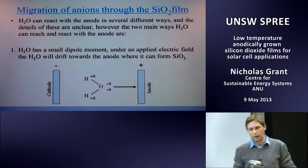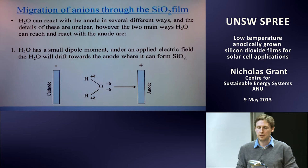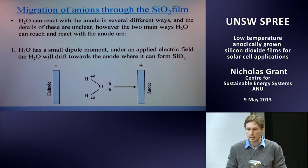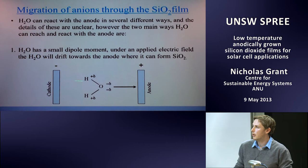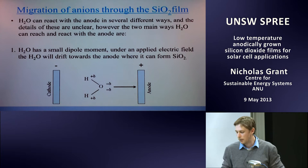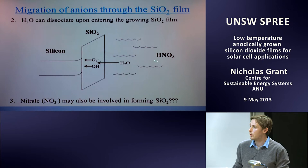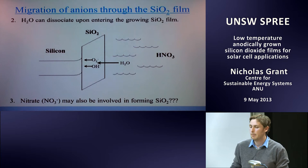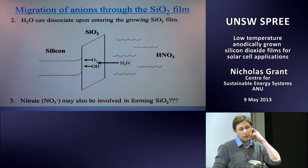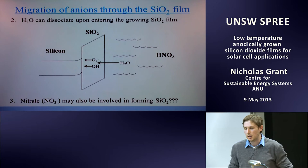How do anions migrate through the silicon dioxide film? Water has a dipole moment, so when a potential is applied across the electrodes, water drifts toward the anode and creates an oxide. Alternatively, water drifts into the silicon dioxide, dissociates into molecular oxygen and hydroxide, which can also form oxide. Whether nitrate from the decomposition of nitric acid can contribute to oxide growth is unknown, but it may be involved.